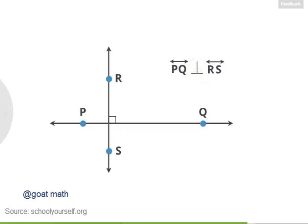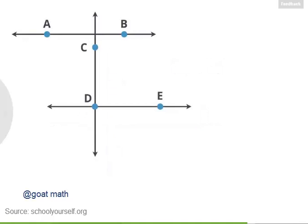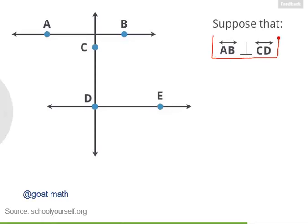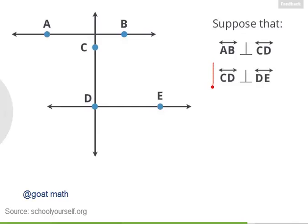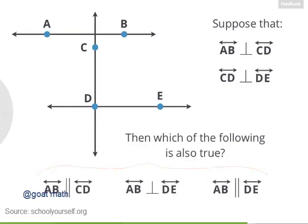Okay, so let's put all the notation together into a sample problem. Here are three lines, and suppose I tell you that line AB is perpendicular to line CD, and I also tell you that line CD is perpendicular to line DE. Then which of the statements down here is also true?